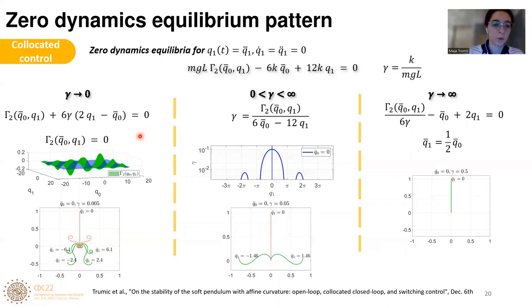Let us look at some extreme points where gamma is equal to 0. Then equilibrium condition is that gamma 2 is equal to 0. We can find equilibrium in the intersection of a zero-plane with gamma 2 function. We can see that for some small values of gamma like 0.005, we have many equilibria, here like seven equilibria. Another extreme point is when gamma tends to infinity. In that case, this term disappears and we have just a single equilibrium that is q1 bar equals to one half of q0 bar.